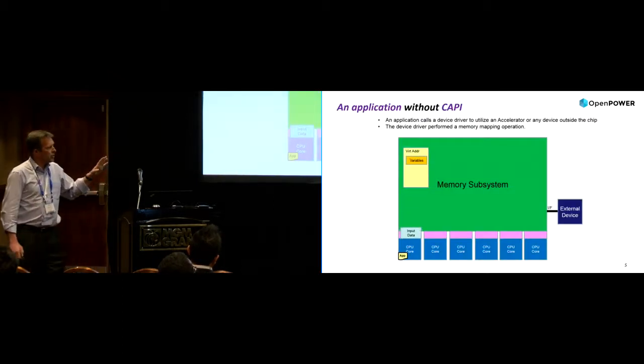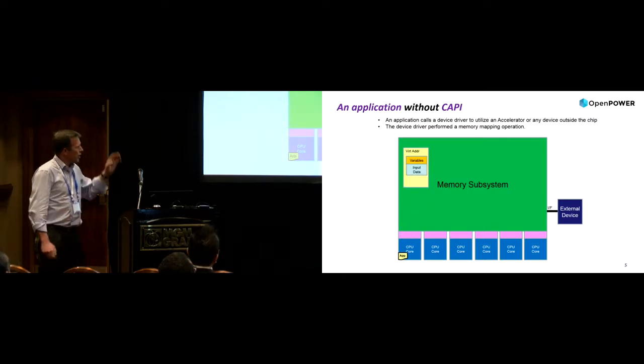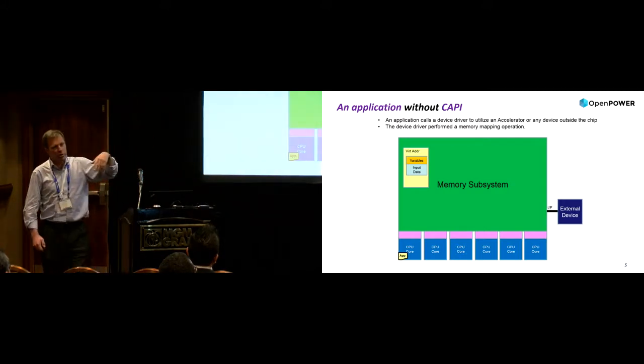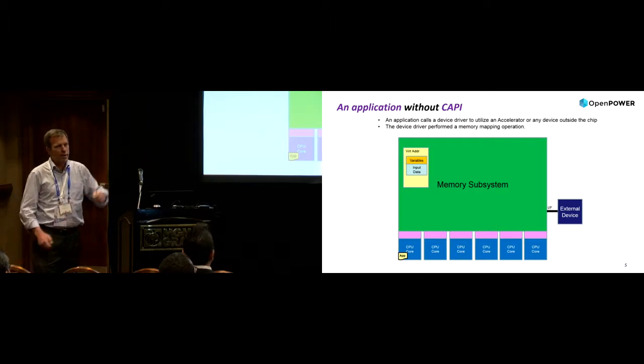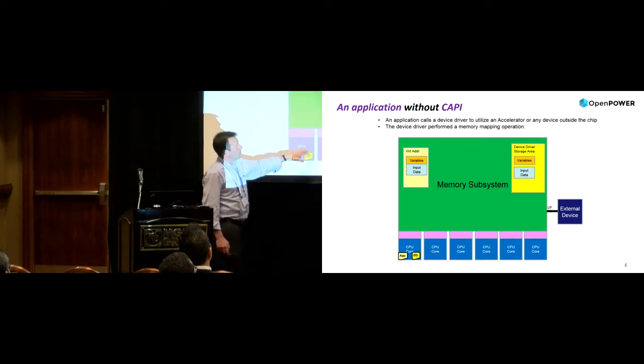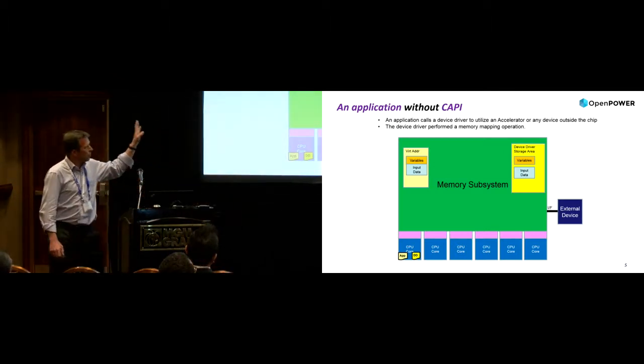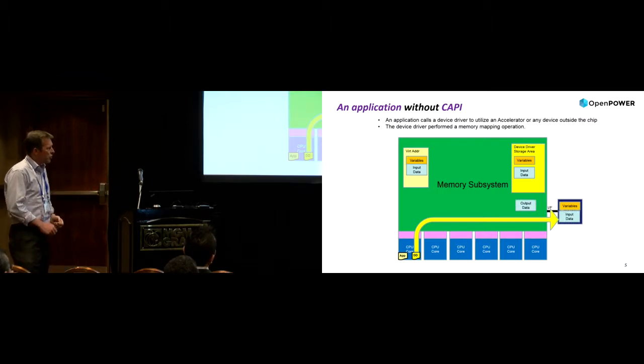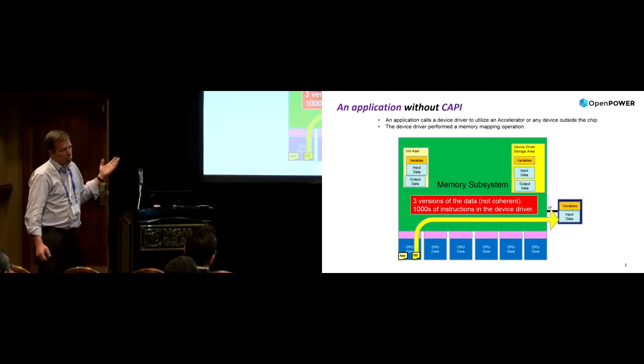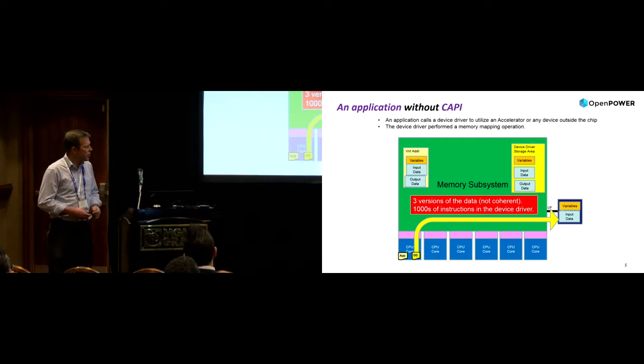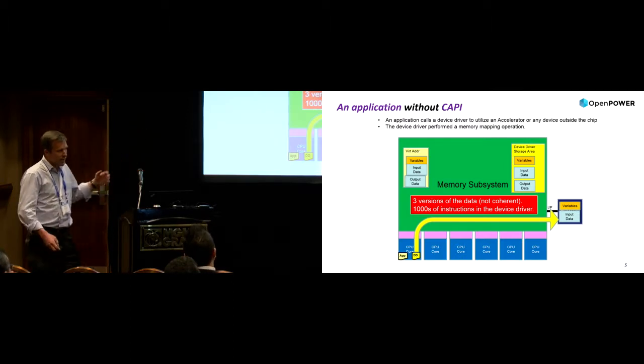So, just very quickly to understand what is the difference between the classic picture. When you have an application running on a system, you have different CPUs, and your application is putting all the variables and data somewhere in the memory. If you want to go to have that on the external card, you will just use a device driver, which will take you some CPU, which will take you some memory also. So, very often, we'll duplicate the variables on the data, and then the device driver will copy all these to the external FPGA or GPU card. And then back, as soon as you have the data, you can have three copies of the data. So, no coherency, thousands of instructions due to the device driver, memory allocated for that, and CPU. So, that's not really offloading.